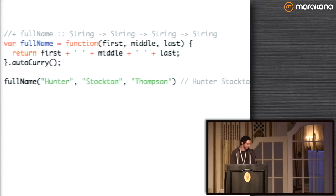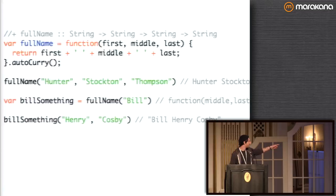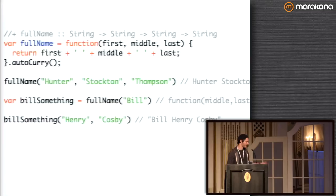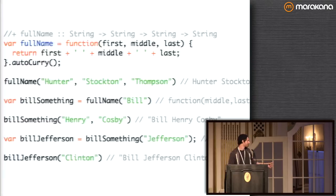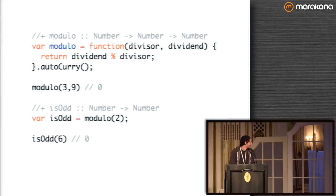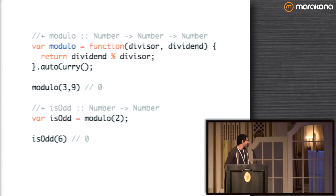Here's another example: "fullName" takes three arguments. We can call it with Hunter S. Thompson and get the name out. Or we can call it just with the first name, and we get this new function called "Bill something" that's waiting for its middle and last. If we give it that, we get Bill Cosby out. We can call "Bill something" with just the middle name and we'll get Bill Clinton if we give it the last. You can pretty much keep giving it arguments piecemeal. So why would we do this? Here's a function called modulo. If you've ever used modulo before, you're pretty much going to call it with two. So we can make a new function called isOdd just by partially applying modulo with the number 2. It comes out with 0 if it's even and 1 if it's odd.